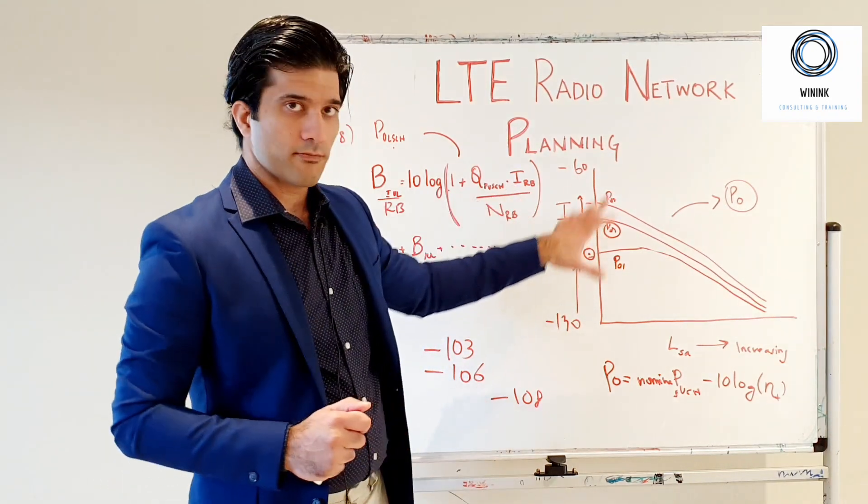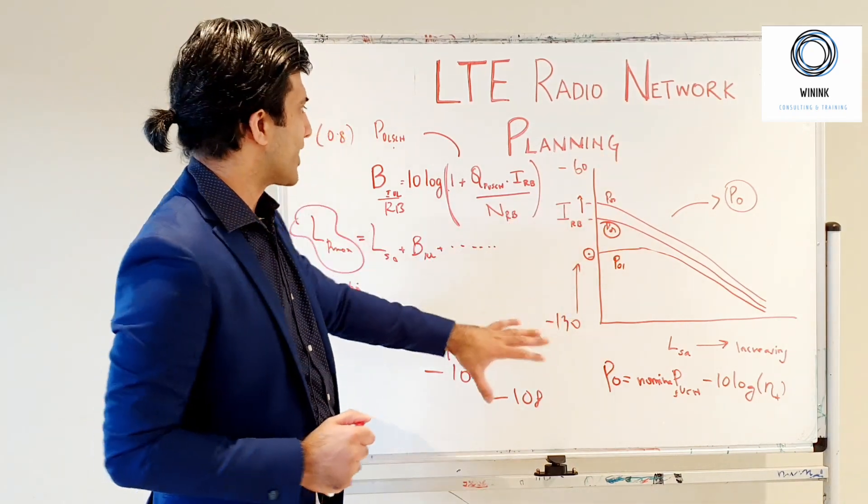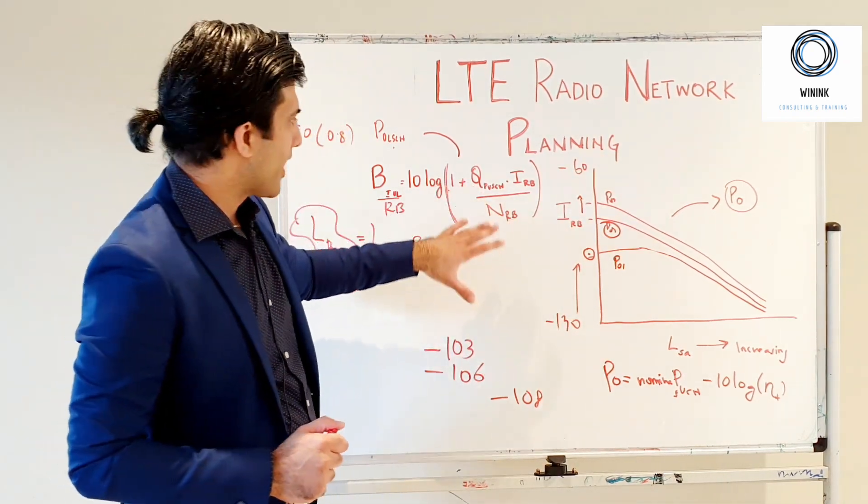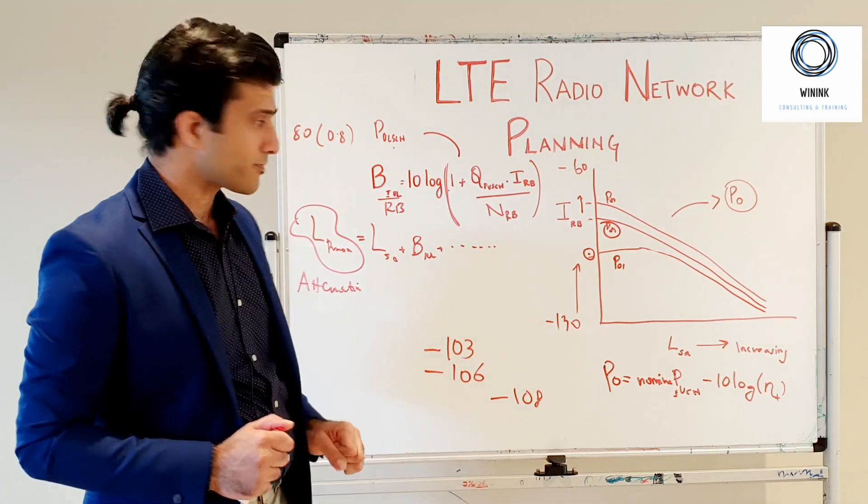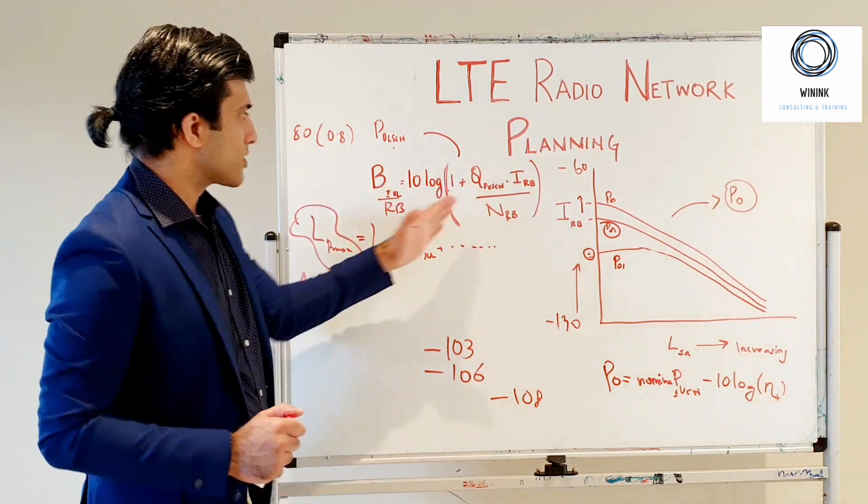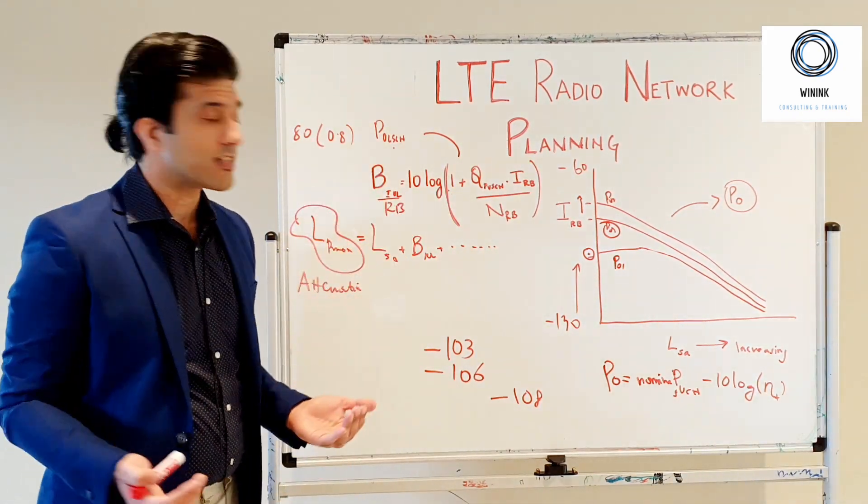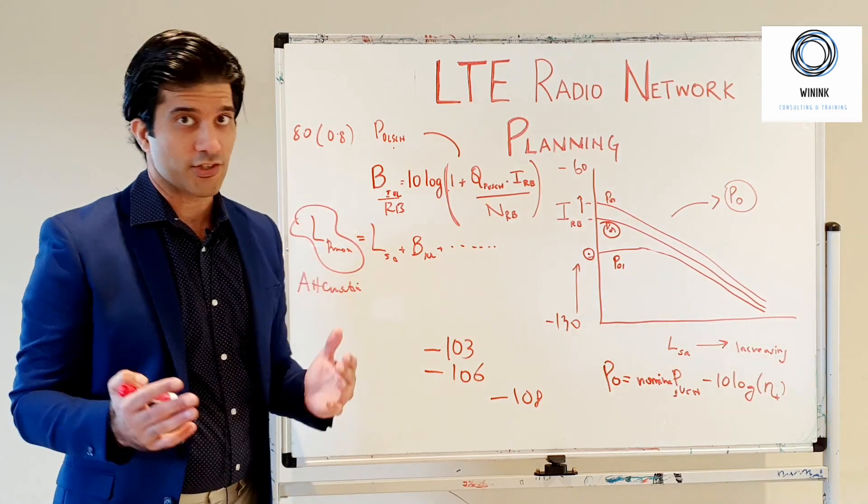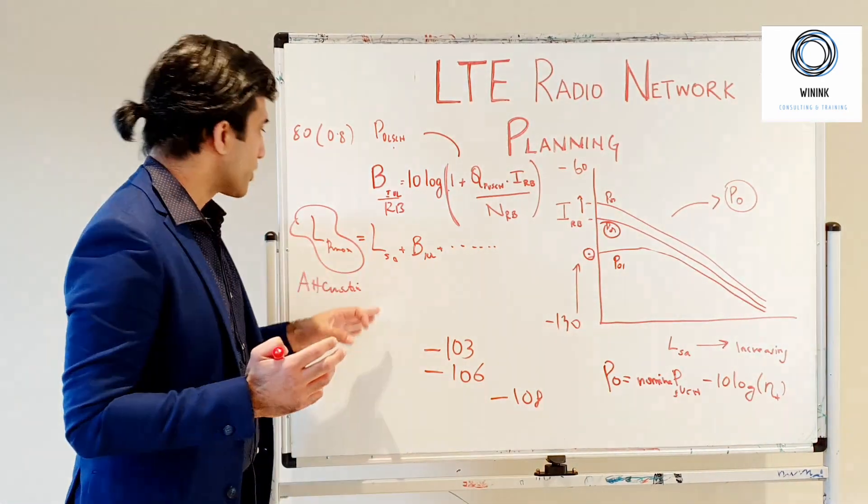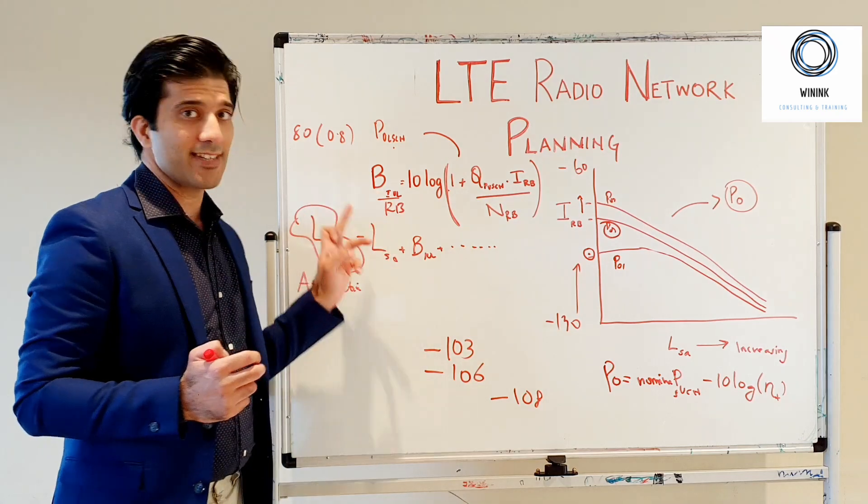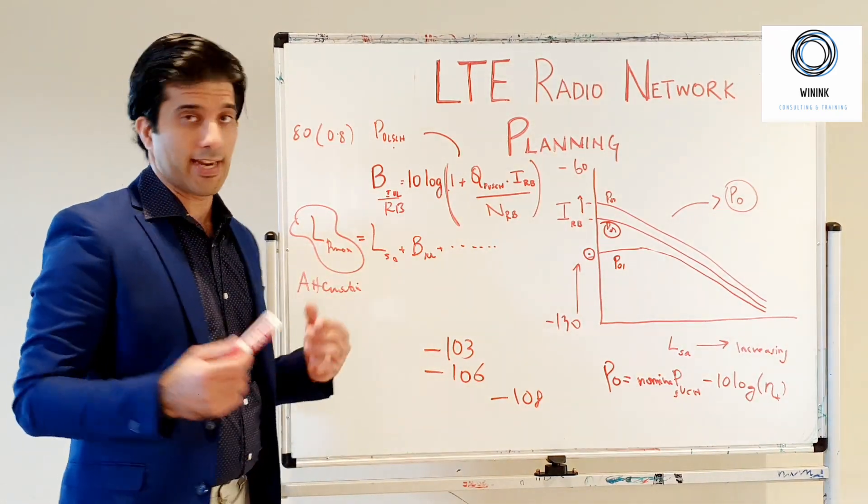This I_RB value comes from this graph as explained. Then you have your cell load and then you have your thermal noise. From this we can calculate and estimate the value of the margin, or the value that you need to put in the link budget to represent the intercell interference in LTE.